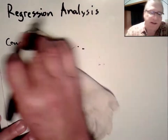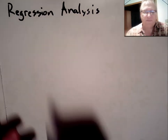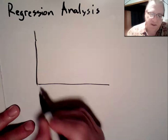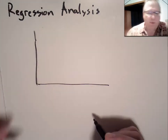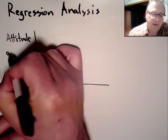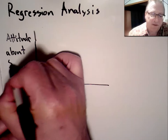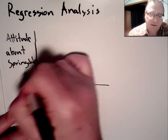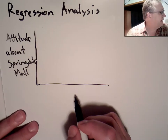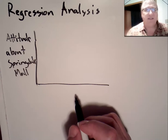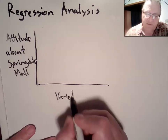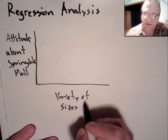Now, what are we going to be looking at in our analysis? We will look at the general attitude about one of our malls — let's start with Springdale — and also variety of sizes and styles. Attitude about Springdale Mall is variable number seven, ranging from one to five, and variety of sizes and styles in terms of importance was rated from one to seven.